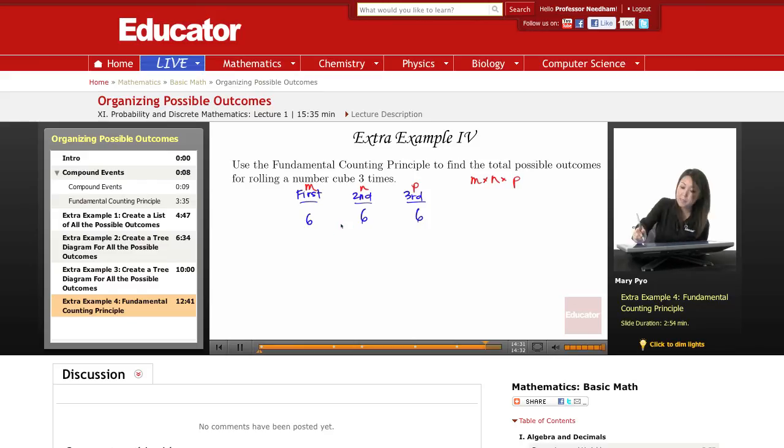So it's going to be six times six. So six times six is 36. And then we're going to multiply this by six.